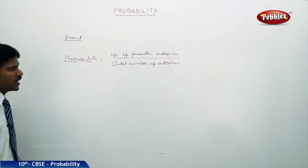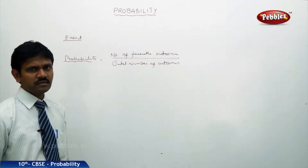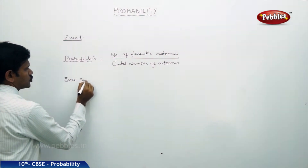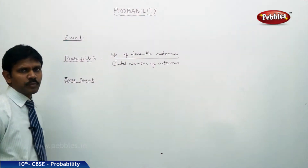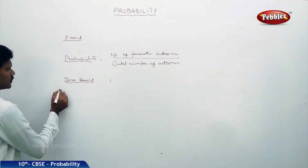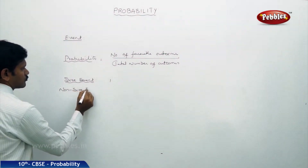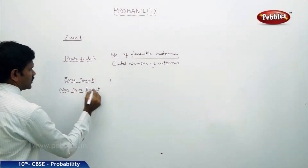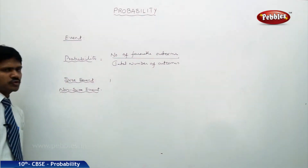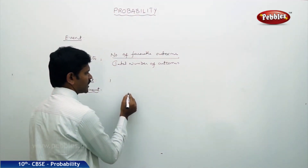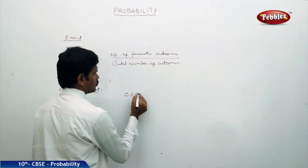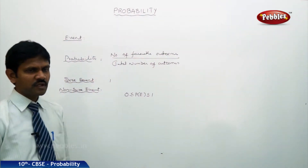In Class 9 we studied the basics of probability. A sure event has a probability always equal to 1. A non-sure event — also called an impossible event — refers to outcomes in a random experiment that are not possible. Probability is always positive and lies between 0 and 1: 0 ≤ P(E) ≤ 1.